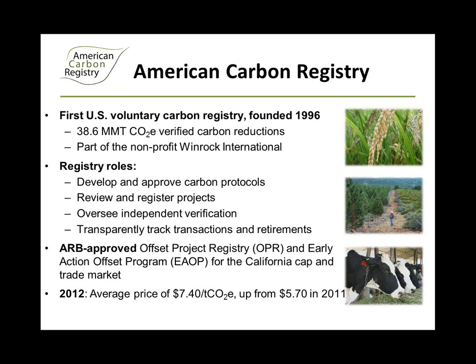ACR was approved by the California Air Resources Board last year as an offset project registry and an early action offset program for the California cap-and-trade market. Projects developed under the offset protocols approved by ARB, as well as those developed using the early action protocols recognized by ARB, can come to ACR to be listed, go through the verification process, and then be issued registry offset credits eligible to be converted into ARB offset credits and used by regulated entities in the California cap-and-trade market. According to the Ecosystem Marketplace, the average price in 2012 was $7.40 per ton across all ACR voluntary transactions, up from the reported 2011 average of $5.70 per ton.